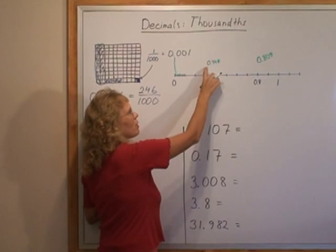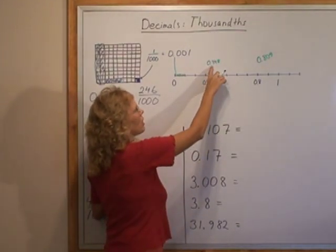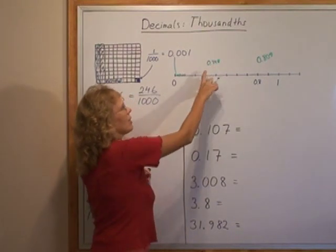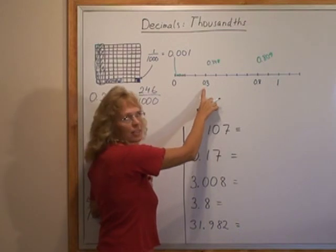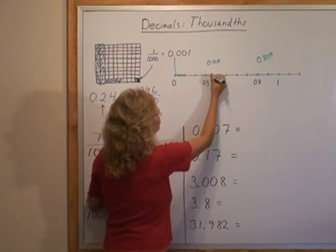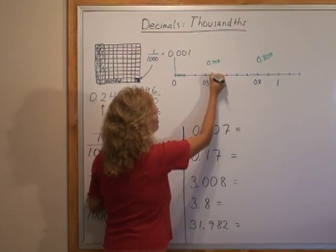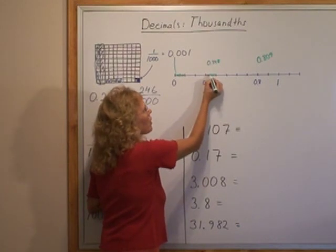If you are asked to point to this number on a number line, you can think that, okay, it is 0.348. It is, there's three tenths there, so it is a little bit past three tenths. Then it has four hundredths so we would divide this into ten parts and go to the fourth line over here.